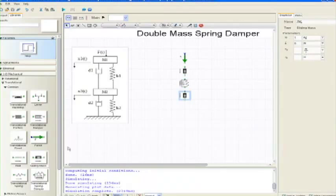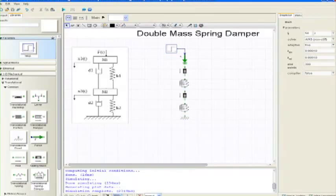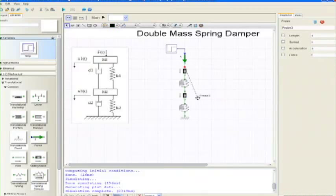MapleSim, which is built on the same powerful symbolic technology as Maple, is a drag-and-drop physical modeling tool that makes it easy to develop models of multi-domain systems, including plant models for control applications.